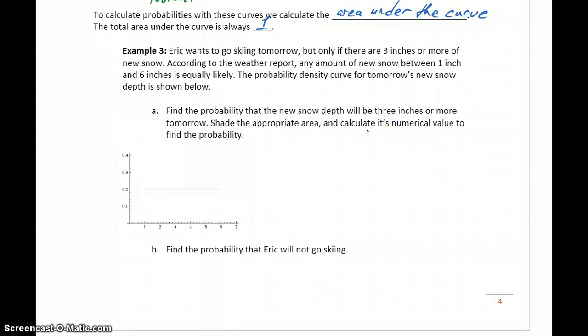So he's going to go skiing if the total amount of new snow is 3 inches or more. So our x-axis represents those different possible outcomes. So starting at 3 inches, he's interested in anything from 3 inches up to 6 inches according to the forecast is the maximum possible amount we're going to see.